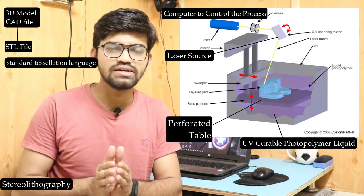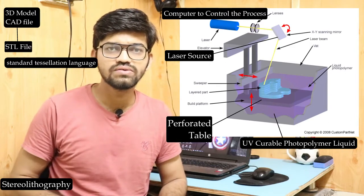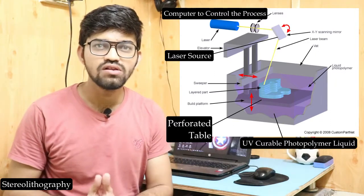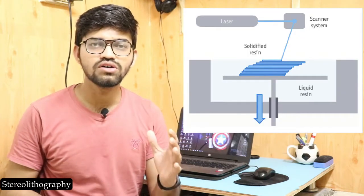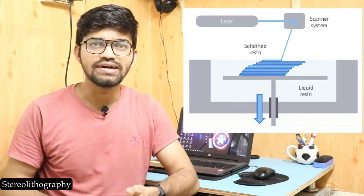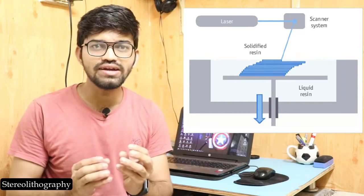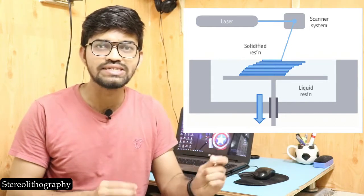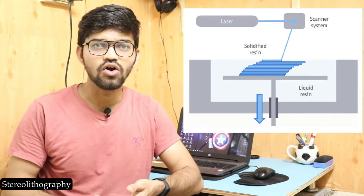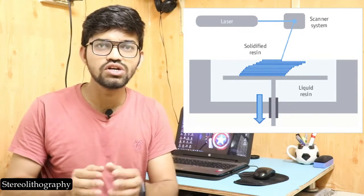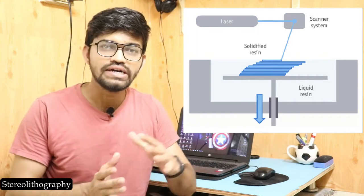The STL file is the input to the 3D printer, and the printer starts working by immersing the perforated table into the liquid tank. As the table moves downwards, the liquid polymer comes into contact through the perforated holes. The UV laser hits the upper surface of that liquid polymer, and as soon as the laser hits it, the polymer gets hardened instantly. The laser has a provision to move in any shape to form the particular design of the object.